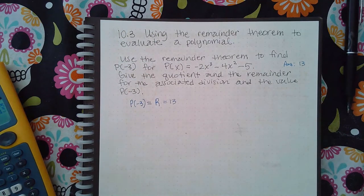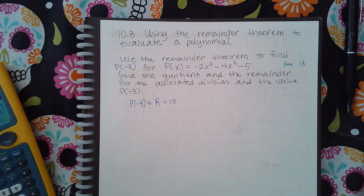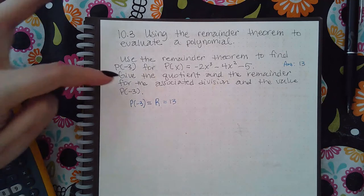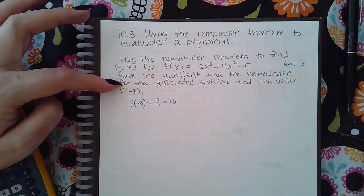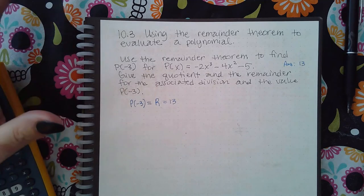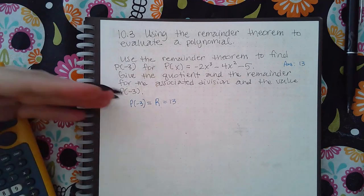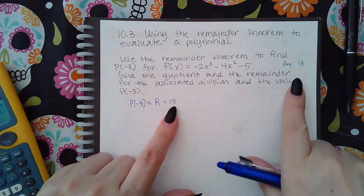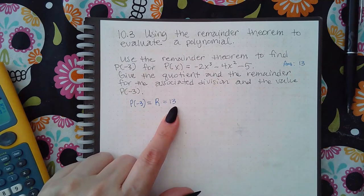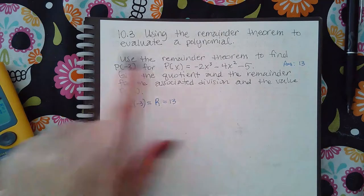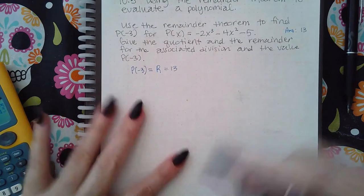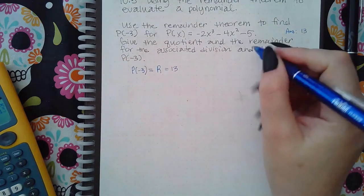That also tells me that the remainder after applying synthetic division will be 13. However, the problem does want you to actually finish it out and give the quotient and the remainder associated with this particular division. It's forcing you to do the synthetic division and won't allow you just to plug it in.